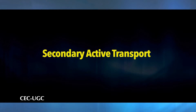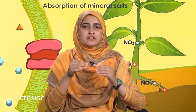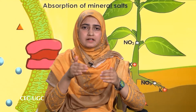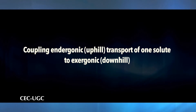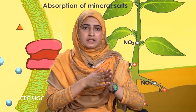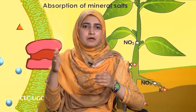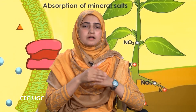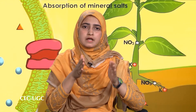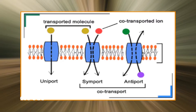Let's now discuss secondary active transport. Carrier-mediated transport can be either passive or active. Active transport through a carrier — coupling endergonic (uphill) transport of one solute to exergonic (downhill) flow of another solute that was originally pumped uphill by primary active transport — is called secondary active transport. There is simultaneous transport of two solutes, called co-transport. This co-transport can be either in the same direction (symport) or in opposite directions (antiport).